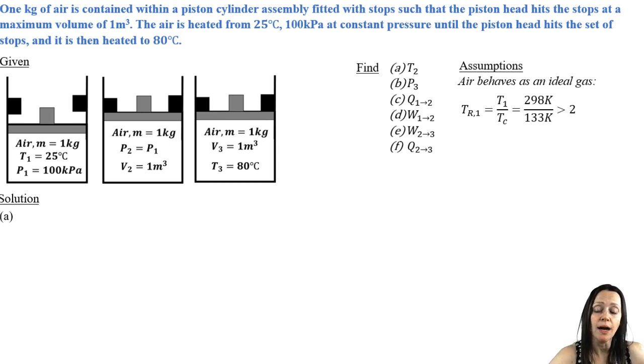And that's very convenient because I can tell from state one to state three, that temperature is just going to keep going up. So since the reduced temperature at one is greater than two, then the reduced temperature at two and three are also going to be greater than two. So it's an ideal gas at all three states. Since it's an ideal gas, I might as well use the ideal gas law to find T2. I plug and chug and I get 348.43 Kelvin.